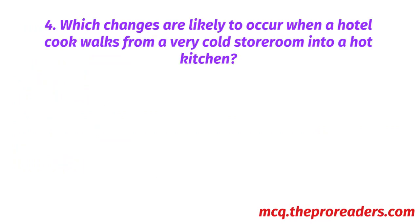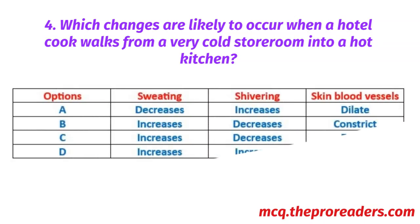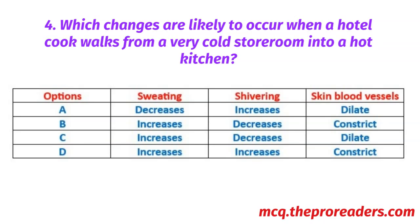Which changes are likely to occur when a hotel cook walks from a very cold storeroom into a hot kitchen? Options — sweating, shivering, skin blood vessels. A. Decreases, increases, dilate. B. Increases, decreases, constrict.